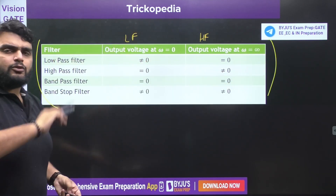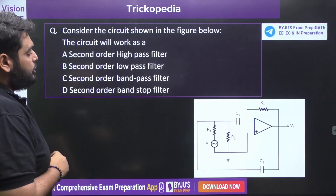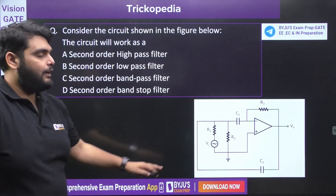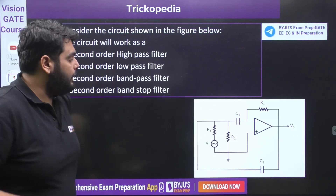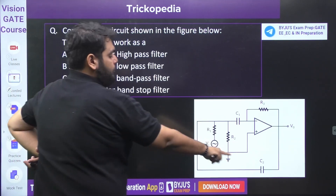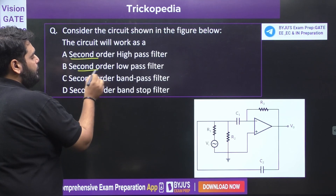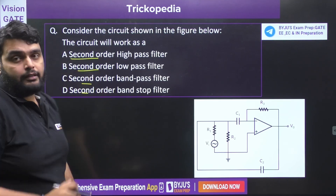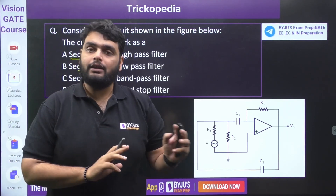Now we are going to solve one question using this trick. In this question we need to identify the type of filter. First, notice carefully that two capacitors are given — that's why it is a second-order filter. Now we will apply the trick.